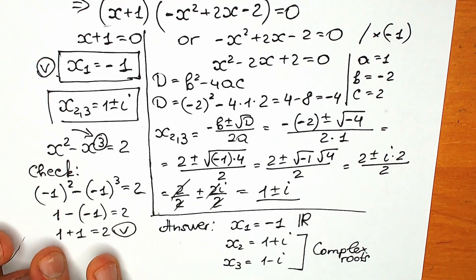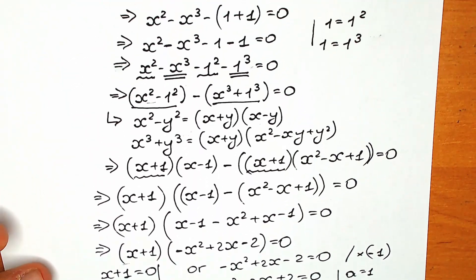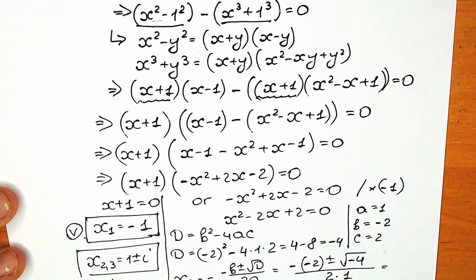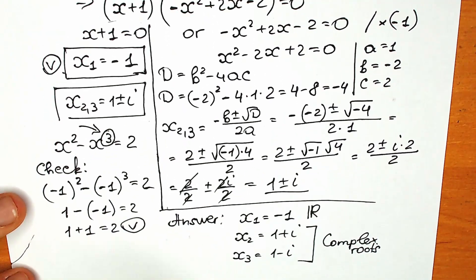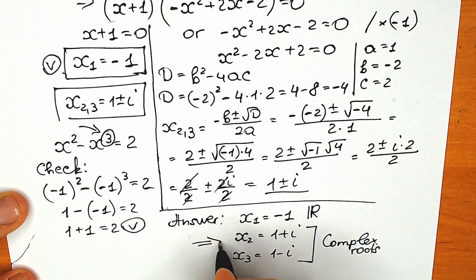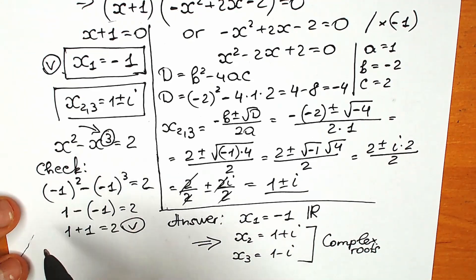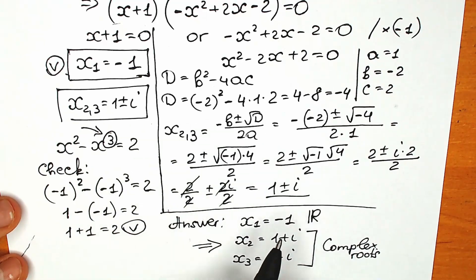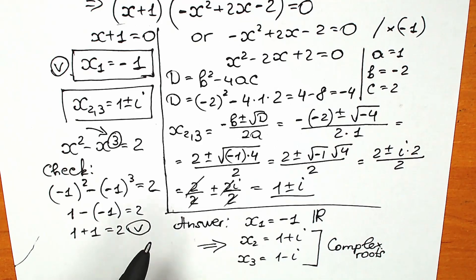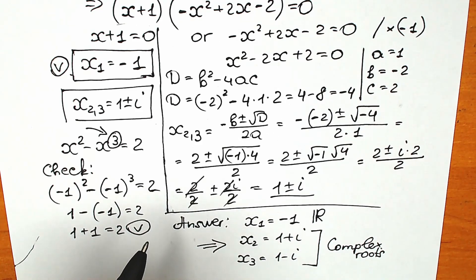I want to suggest you solve this question completely rather than just using inspection. With inspection you can easily find the real root, but there's no way to find the complex roots that way. This is a full solution with really interesting tricks. Thank you for your time, wish you all the best, and see you in the next video!